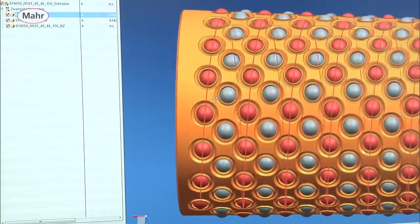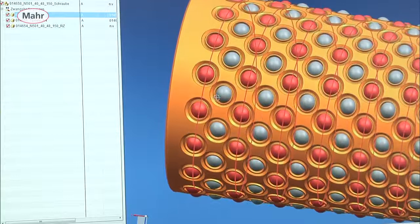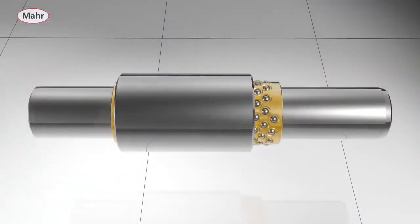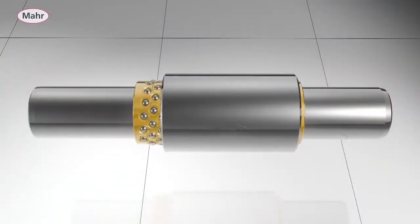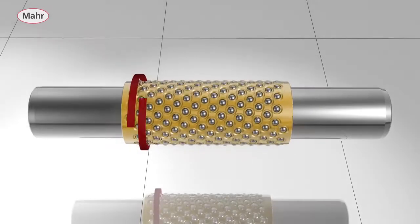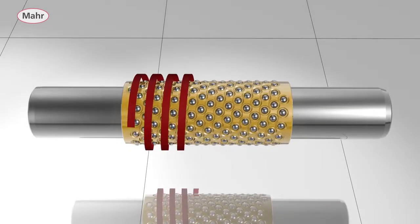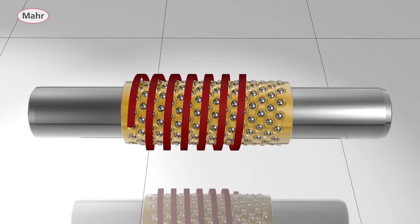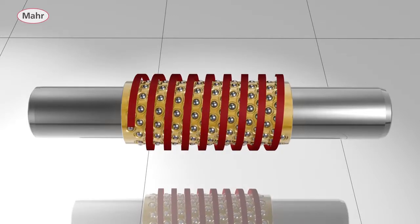Preloading ensures that all of the many balls in the ball cage are always simultaneously in contact with the bearing surfaces. This ensures that the rotary stroke bearing is highly durable and provides great rigidity and guiding accuracy. This provides significant advantages over systems with circulating balls.